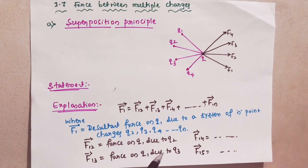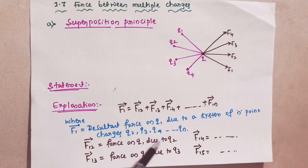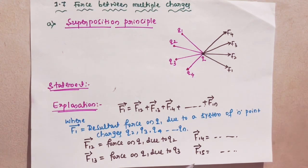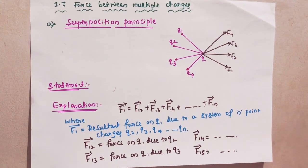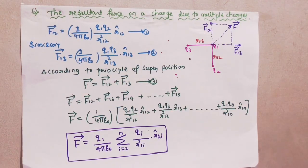Here vector f1 means the resultant force on q1 due to a system of n point charges q2, q3, q4. f13 means force on q1 due to q3, f14 means force on q1 due to q4, and f15 means force on q1 due to q5. Like this we have to find the resultant force using this superposition principle. This principle is used to find the force between multiple charges.